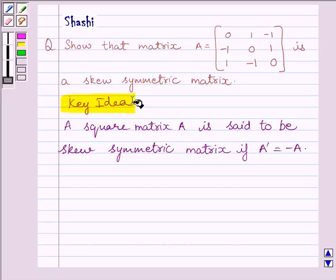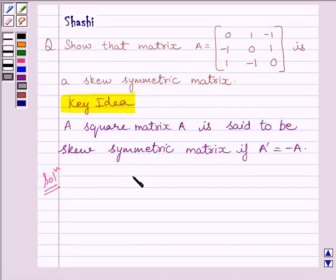Let us now start with the solution. We are given A equals the matrix [0, 1, -1; -1, 0, 1; 1, -1, 0].